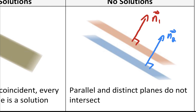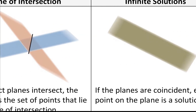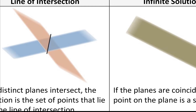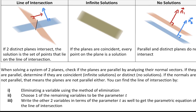If the normals are parallel, we know we either have parallel and distinct planes or parallel and coincident planes. If our normal vectors are not parallel to each other — like in this scenario where the planes aren't parallel — then the planes intersect in a line. So when solving a system of two planes, we check if the planes are parallel by analyzing their normal vectors.